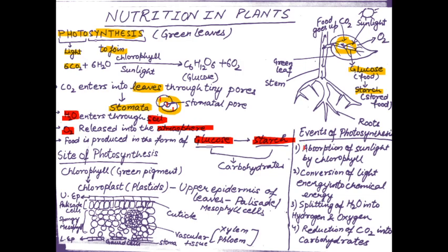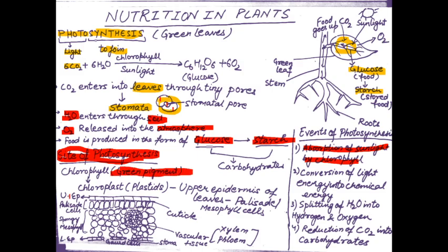What are the basic events of photosynthesis? The first is absorption of sunlight by chlorophyll. Chlorophyll takes up the sunlight — chlorophyll is basically the site of photosynthesis in leaves and is the green-colored pigment. In the diagram, you can see the upper epidermis and lower epidermis of the leaf. In the lower epidermis are the stomata and guard cells, and this layer belongs to spongy mesophyll cells.